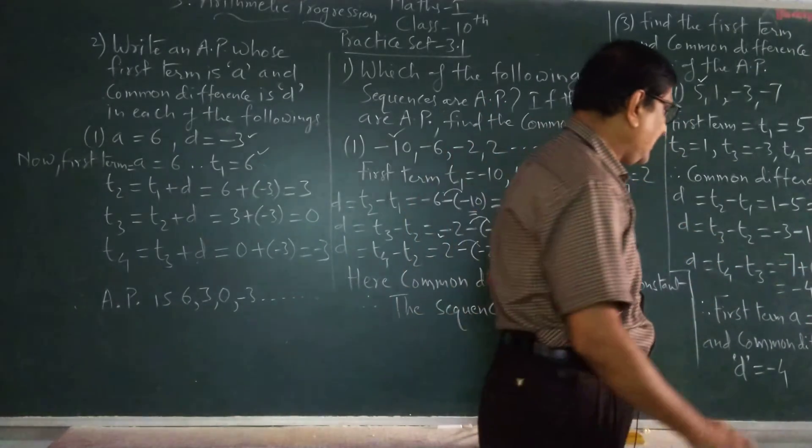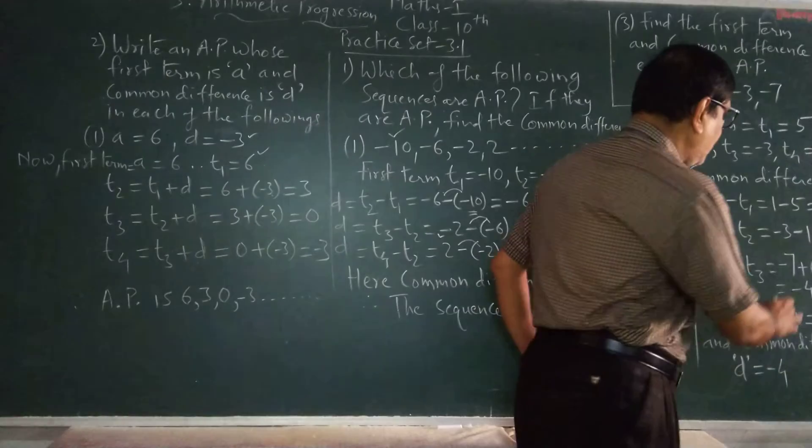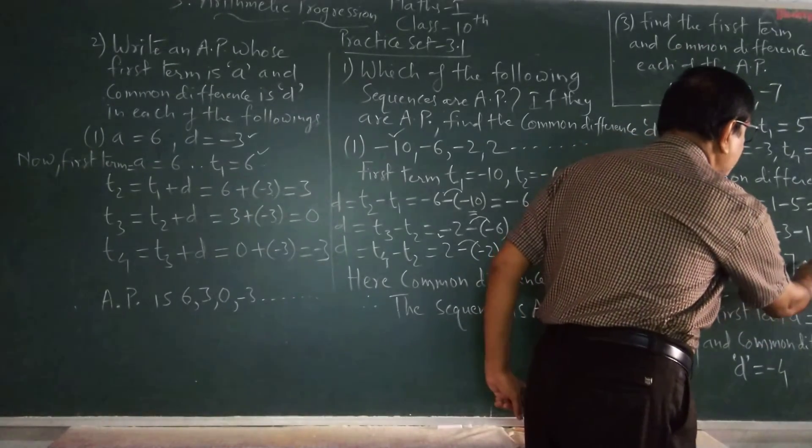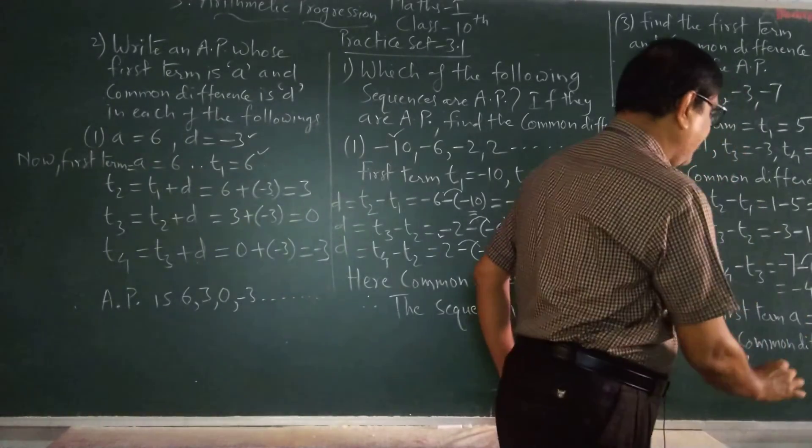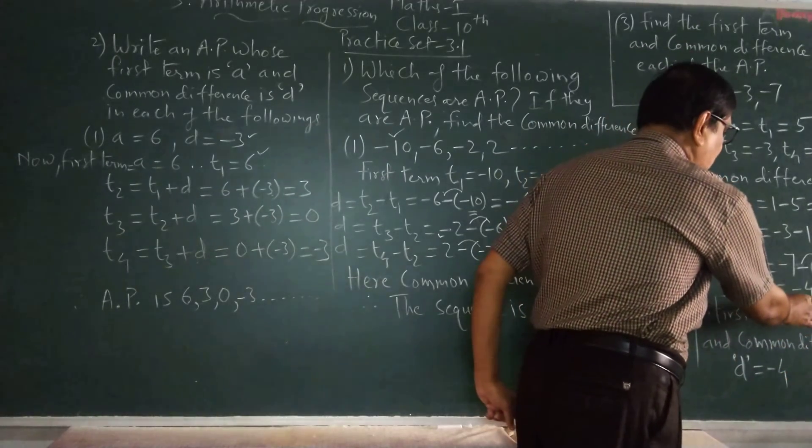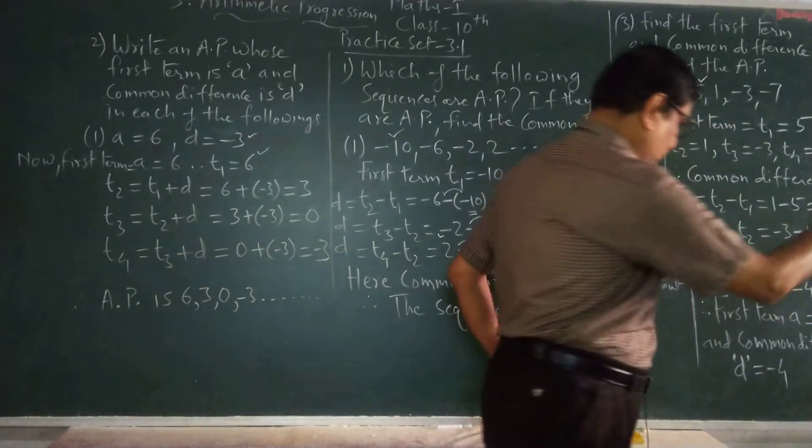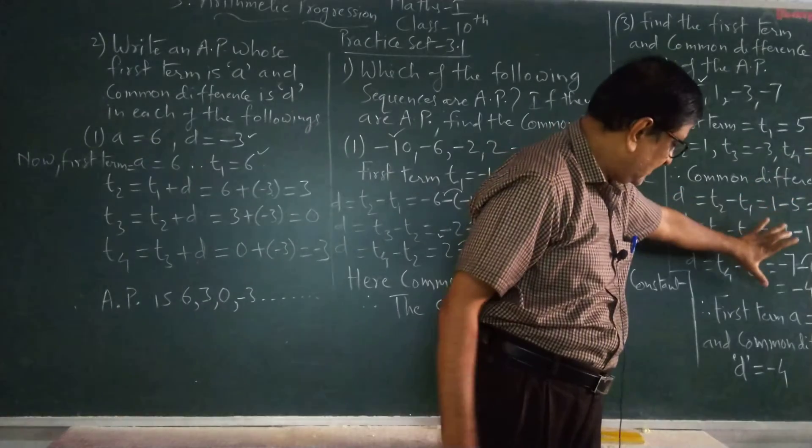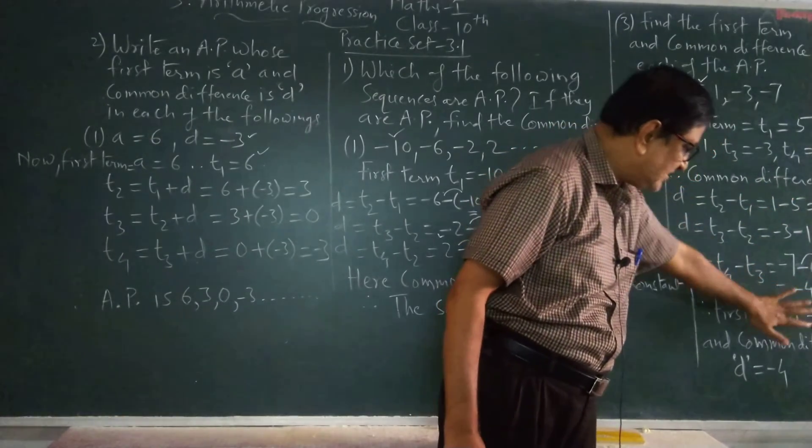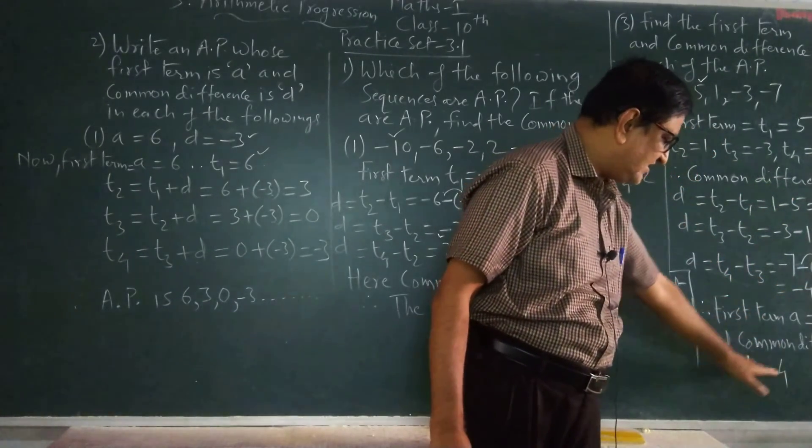This is minus, so minus 7 plus 3, that is equal to minus 4. So here the first term is A is equal to 5 and common difference is minus 4.